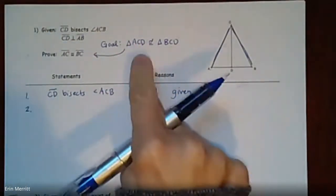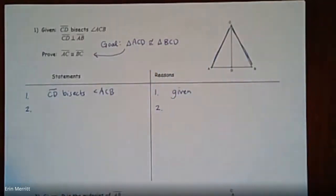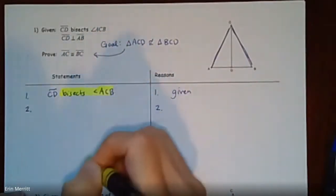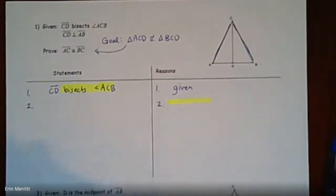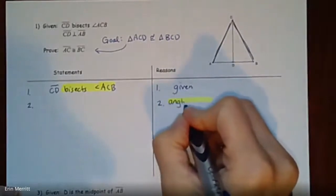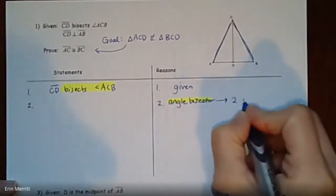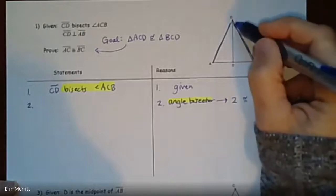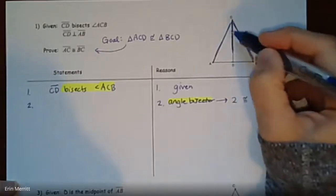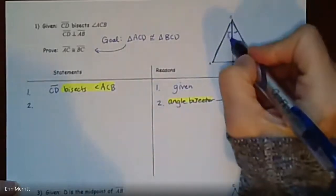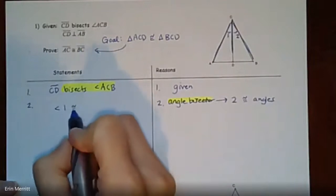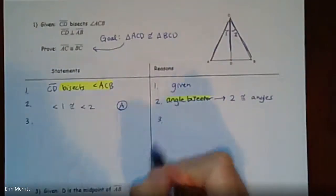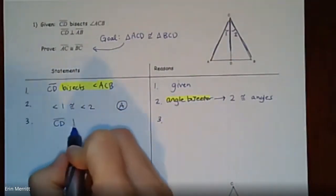Keep that goal in mind. Starting with the given that CD bisects angle ACB — it's an angle bisector — that means we get two congruent angles. Looking at the diagram, CD comes through and bisects angle ACB. Label those angles one and two: angle one is congruent to angle two. That gives us a pair of angles in those triangles. Next given: CD is perpendicular to AB.